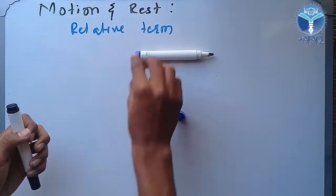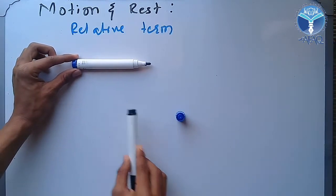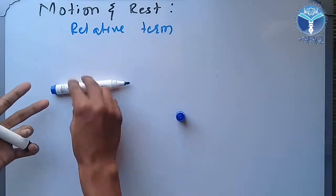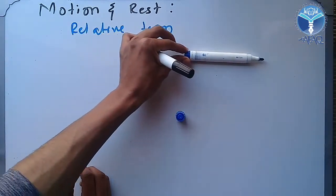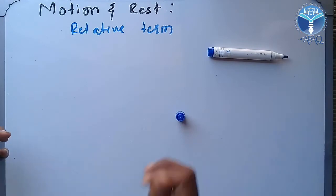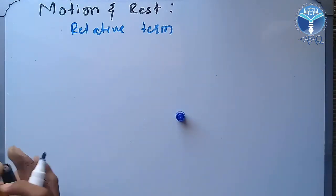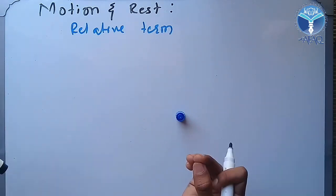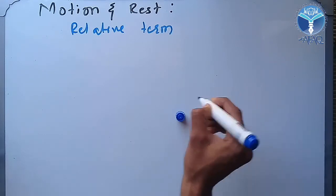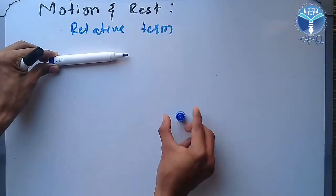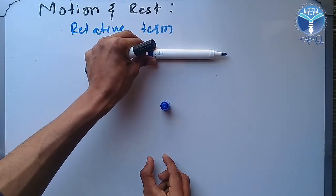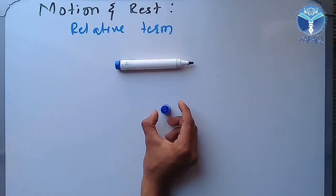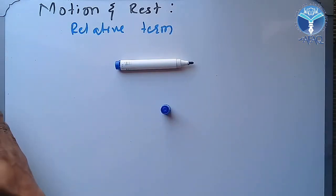We can see that the observer is in the wrist and the position has changed, and the marker is in motion because it has changed its position. So we can define motion: if a body is changing its position with respect to an observer, that will be called motion. And if a body is not changing its position, we can say it is at rest.